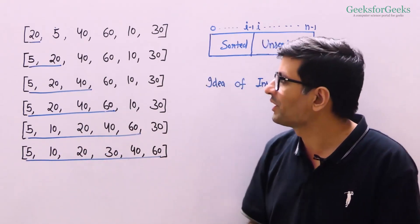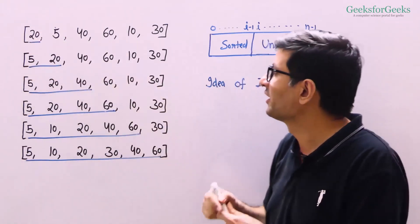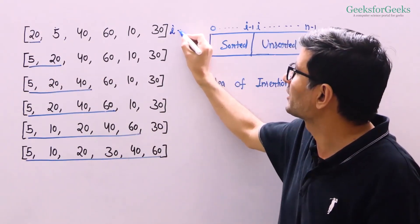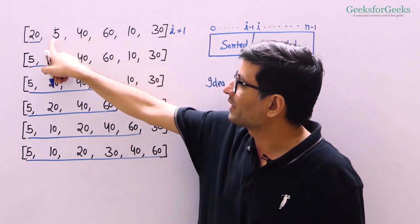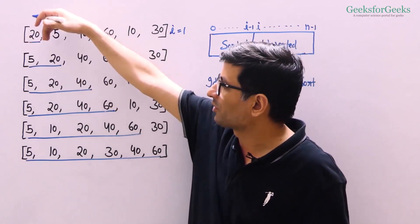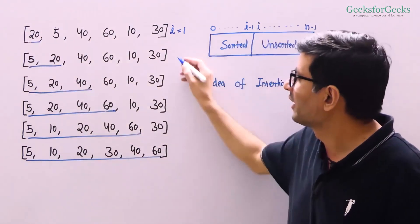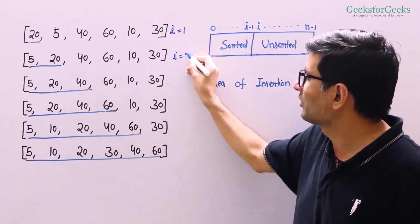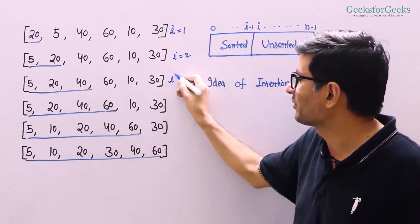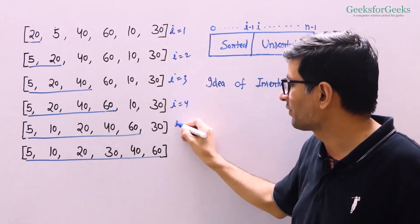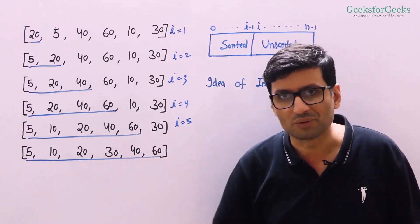We run a loop that begins with the second element because the first element is already sorted. So i begins from 1. We consider each element and place it in the sorted prefix sub-array from 0 to i-1. Once placed, we move to the next iteration. After i equals 5, we get the whole array sorted.